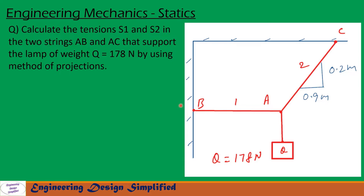In this problem, a lamp of weight Q equal to 178 N is suspended as shown in the figure. String AB is horizontal and string AC is arranged as shown. The slope is given: height is 0.2 meters and horizontal distance is 0.9 meters. We need to find tensions S1 and S2 in the two strings. Let us see in the coming slides how to solve this problem.